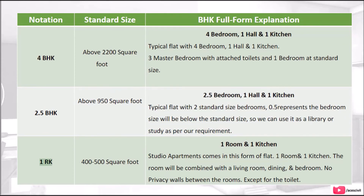1 RK: 400 to 500 square feet. 1 room and 1 kitchen. Studio apartments come in this form of flat. The room will be combined with a living room, dining, and bedroom, with no privacy walls between the rooms, except for the toilet.